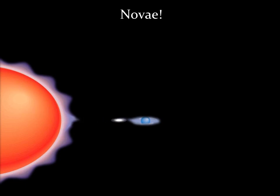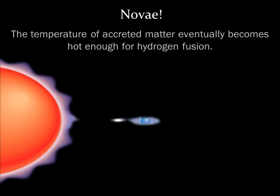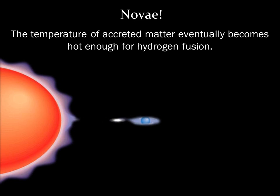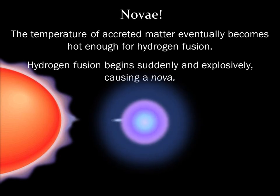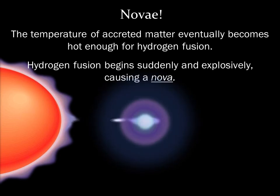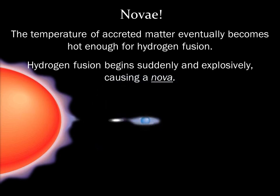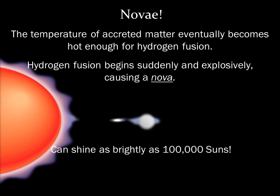Eventually, the accreted material is hot enough for hydrogen fusion. The hydrogen fusion begins suddenly and explosively, causing what we call a nova. A nova can shine as brightly as 100,000 suns.